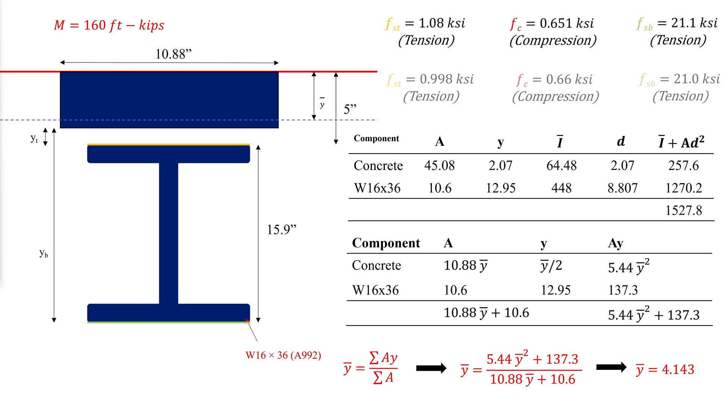To find the maximum bending moment the composite section can handle, we assume that the nominal flexural strength will be reached when the entire steel cross section yields and the concrete crushes in compression.